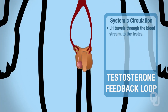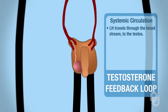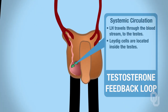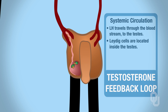Within the testes, there is a certain cell type called the Leydig cells. The Leydig cells are found within the testes, and when luteinizing hormone binds to the receptors on the Leydig cells, the Leydig cells will synthesize and secrete testosterone.